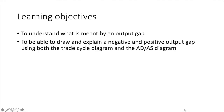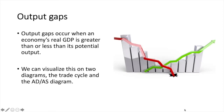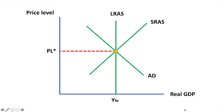In this video we'll discuss what output gaps are and demonstrate them on two diagrams, specifically the trade cycle and the aggregate demand and aggregate supply diagram.